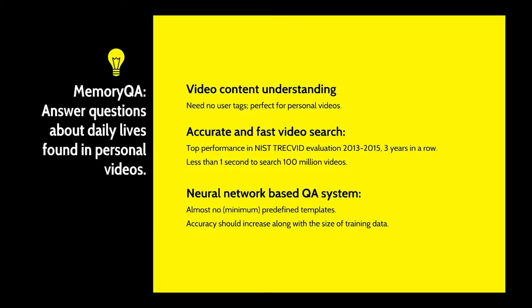The proposed system has the following characteristics. First, the questions are answered by the content of the video, and no user tags are needed. Second, it leverages a state-of-the-art video processing engine developed at Carnegie Mellon University to provide accurate, efficient video understanding and search. Third, unlike many question-answering systems, the proposed system is an end-to-end neural network that relies on a minimum number of manual templates, and its accuracy is set to grow along with the number of training data. To the best of our knowledge, the proposed method is the first to answer questions grounded in personal video content.